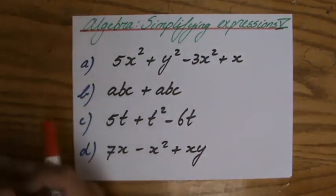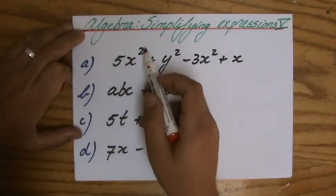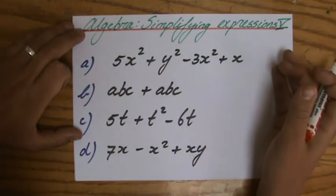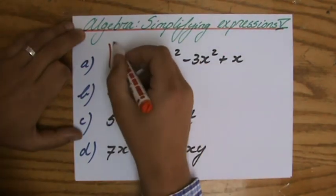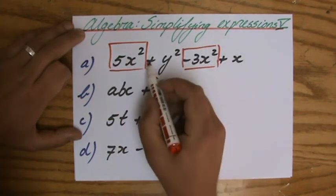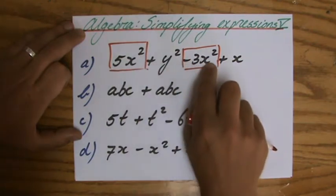I have to find the like terms. This is a term with the variable x², and I have another term with x² over there. I'm going to put a box around 5x² minus 3x². Not plus—the plus belongs to the y². It's minus 3x².